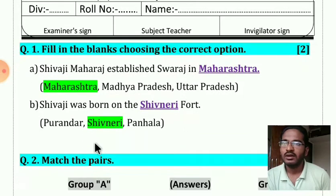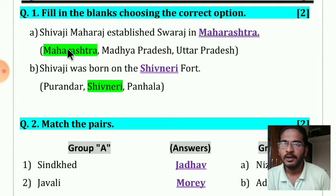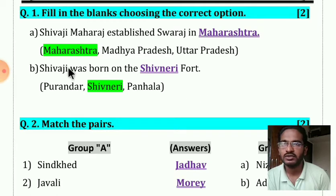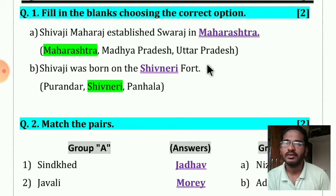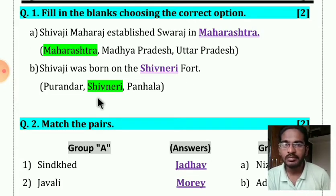Your first question was filling the blanks by choosing the correct option, for two marks. Shivaji Maharaj established Swaraj in blank — the answer is Maharashtra. Three options were there: Maharashtra, Madhya Pradesh, and Uttar Pradesh. The next question: Shivaji was born at the Shivaneri fort — the answer is Shivaneri.